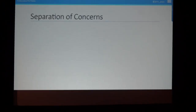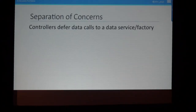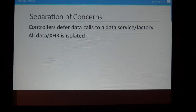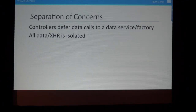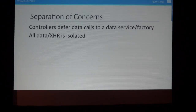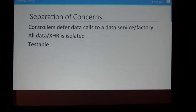Tip two is all about data patterns. I like to follow the single responsibility principle or separation of concerns. Controllers should deal with just what they need to deal with: handling information for the view. They should not be making data calls to services and factories directly — they should defer to services and factories. All your XHR calls should be isolated. There are several ways to get data: local storage, SOAP, JSON services, $resource, $http, Breeze, or others.